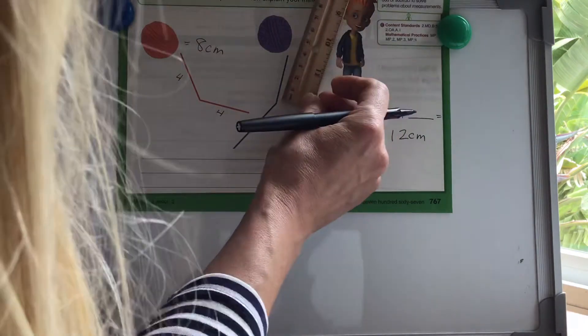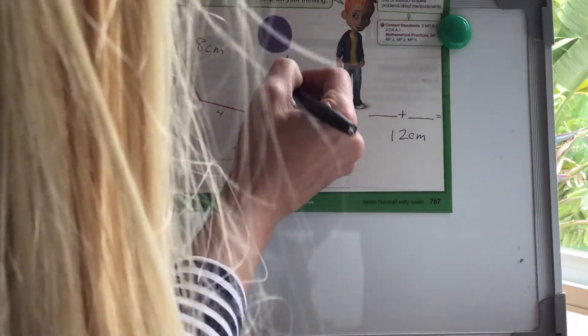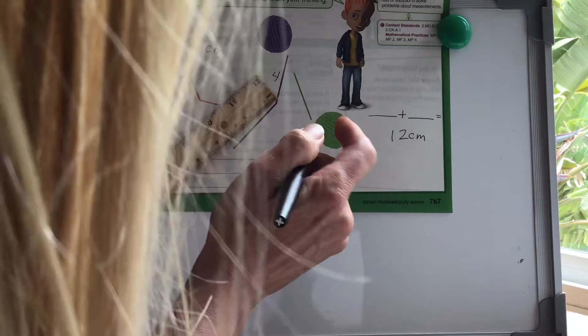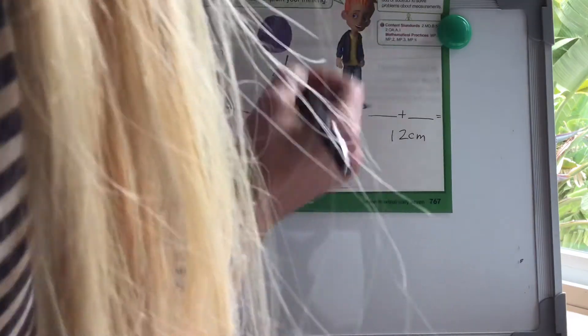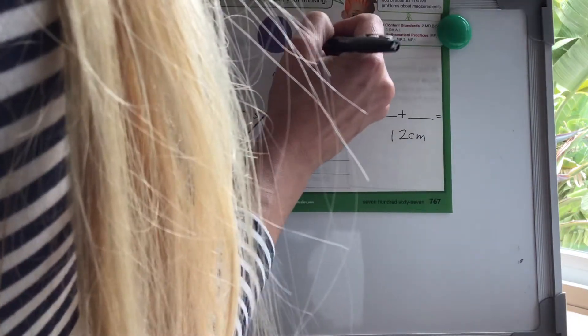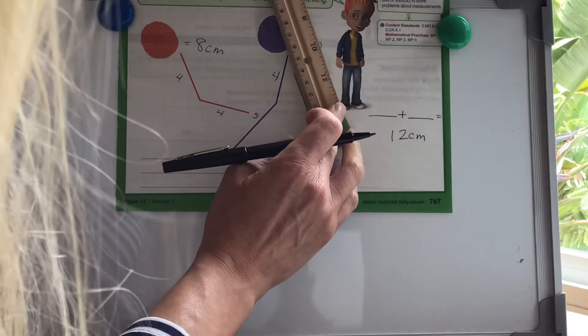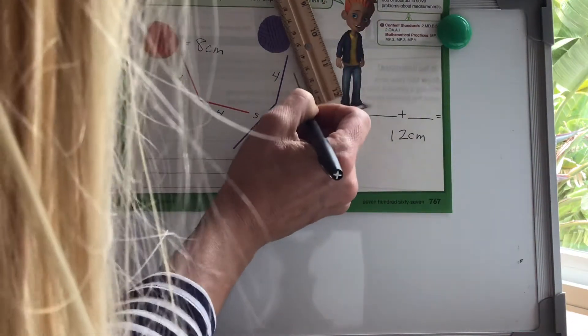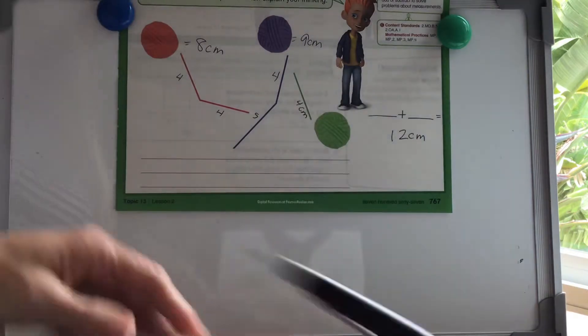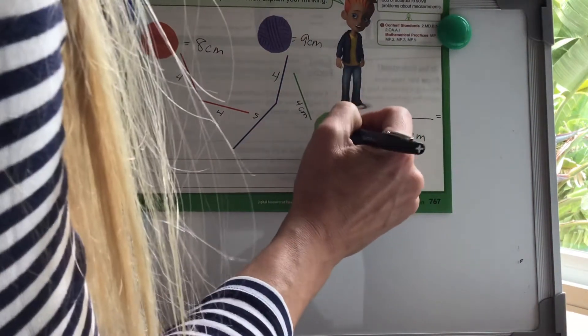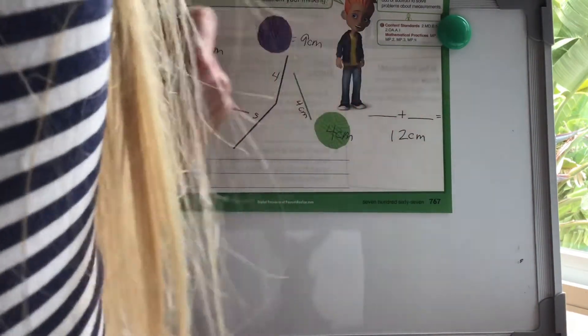This one here is four centimeters plus four centimeters. So this one here is eight centimeters. Let's measure the purple one. The purple here is four centimeters this way, and five centimeters this way. So the purple one is nine centimeters, and then this green one here is four centimeters. So I'm going to write four centimeters, nine, and eight.